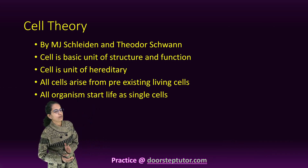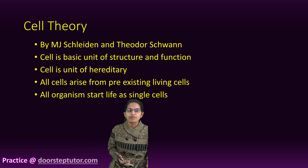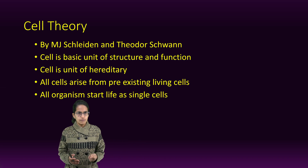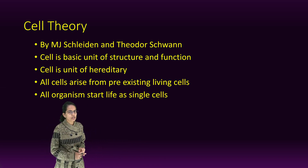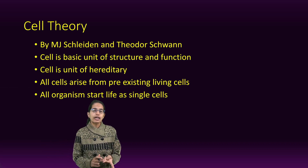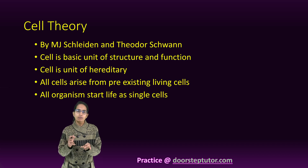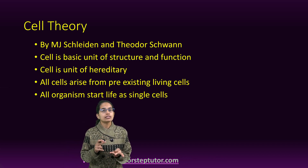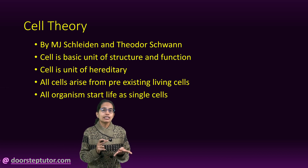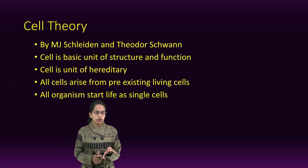The next is a very important concept. Schleiden and Schwann gave the cell theory. The four fundamental aspects of cell theory are: cell is the basic structural unit of life; cell is the basic functional unit of life; cell arises from a pre-existing cell — the concept given by Virchow, which says Omnis Cellulae Cellula; and cell is considered as a hereditary unit, passing from one generation to another.